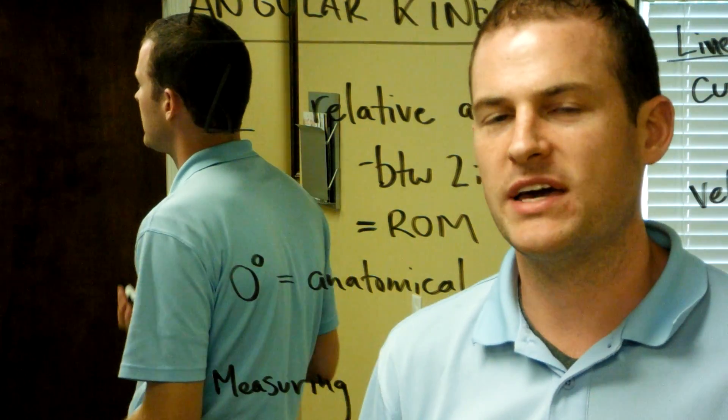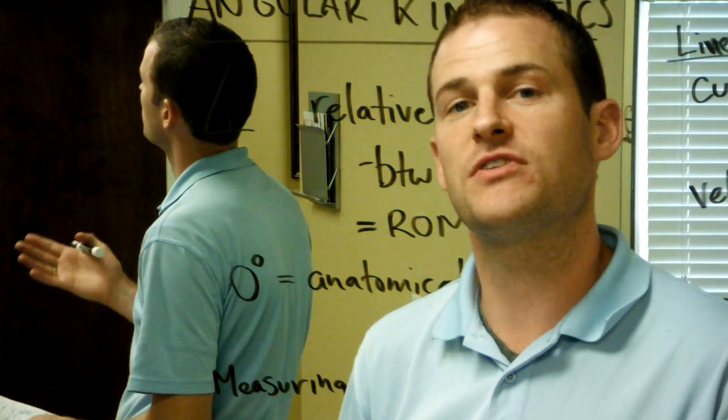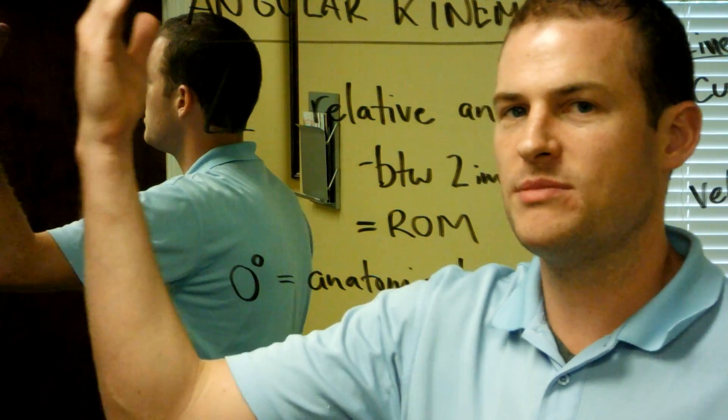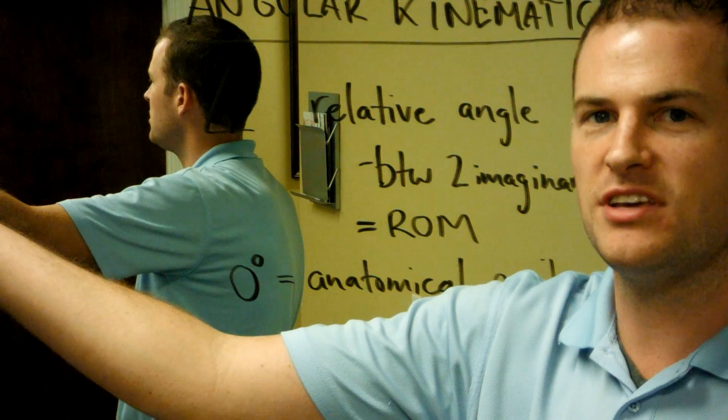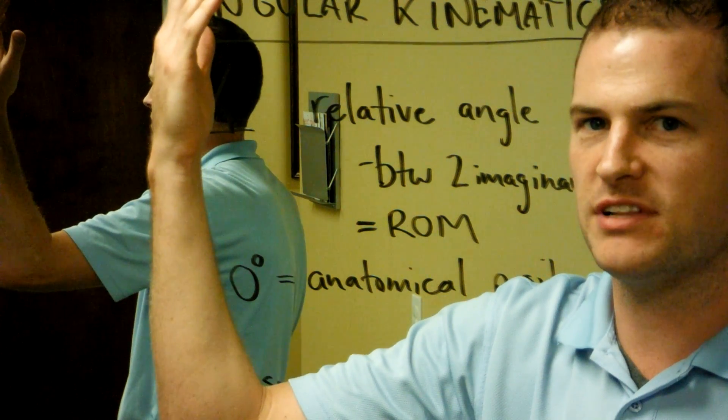We can also describe change from one motion to another. So we may say that the elbow moved 30 degrees into extension if we were to start at 90 degrees of flexion.